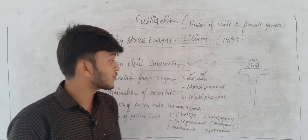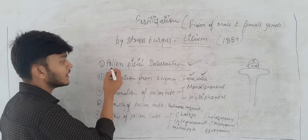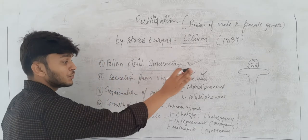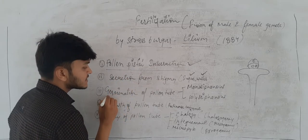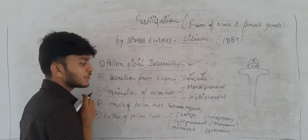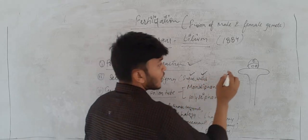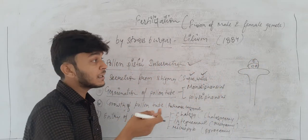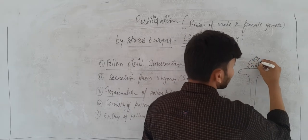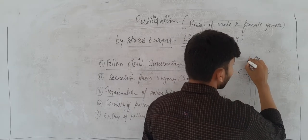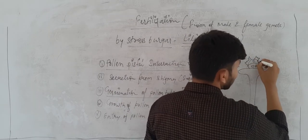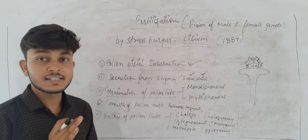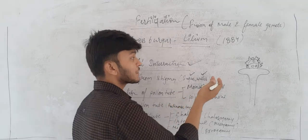The next step is the formation of the pollen tube. The pollen grain germinates and forms a pollen tube, and the germination process starts from the pollen grain outward.